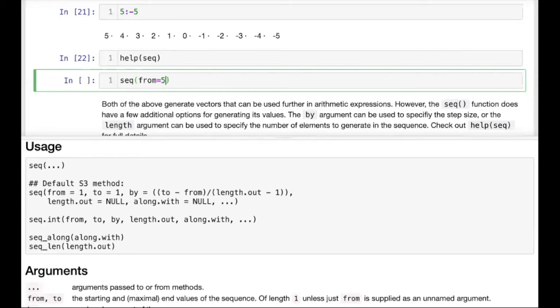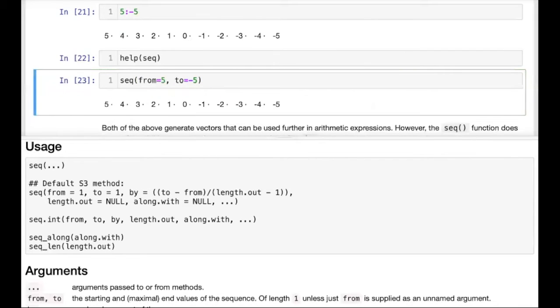And then to repeat this example, we'll use the to keyword argument with negative 5. We then run this code block, and we see we get the exact same output as we did before using the shorthand colon notation.